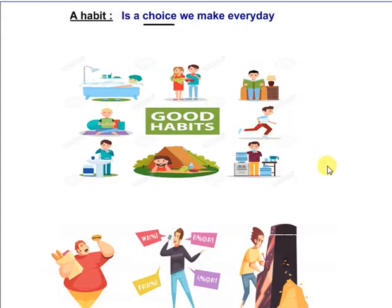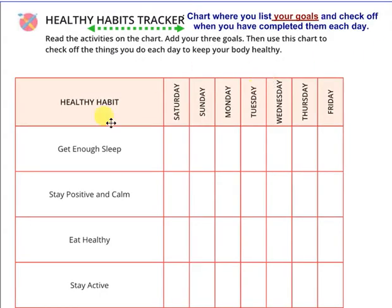Good morning Junior 3, how are you? Our lesson today is talking about habit. What's the meaning of habit? We make a revision: habit is a choice we can make every day. If I have two choices and I choose the same one every day, that is called a habit. A habit may be a good habit or a bad habit. A good habit is called a healthy habit, and a bad habit is called an unhealthy habit.